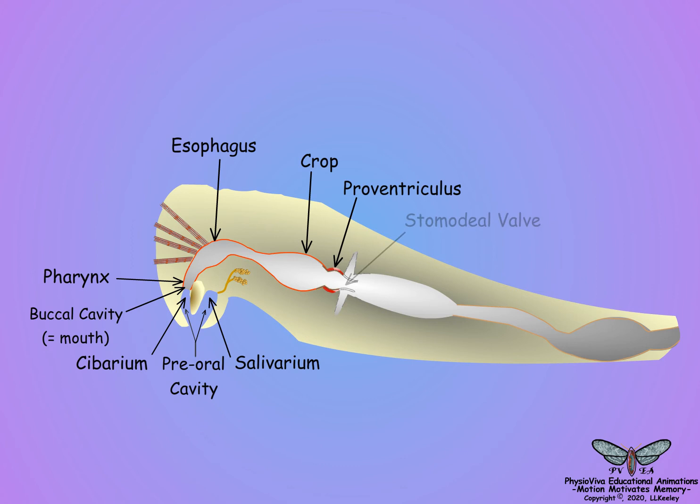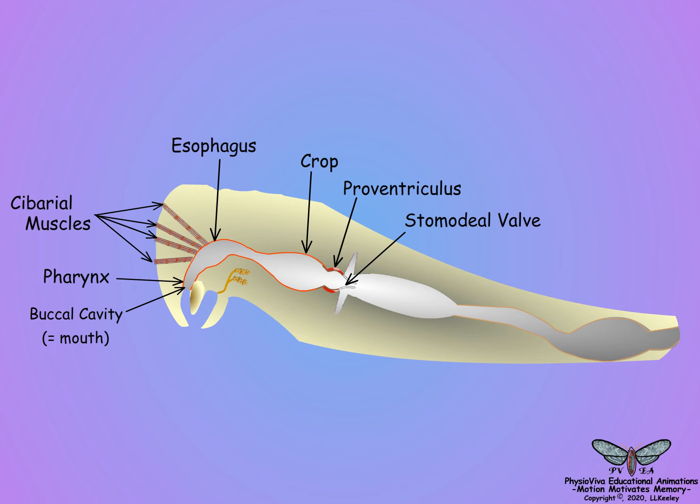The esophagus is highly muscular and initiates swallowing. In species with sucking mouthparts that feed on fluids, the subareal muscles produce a pumping action by the esophagus.